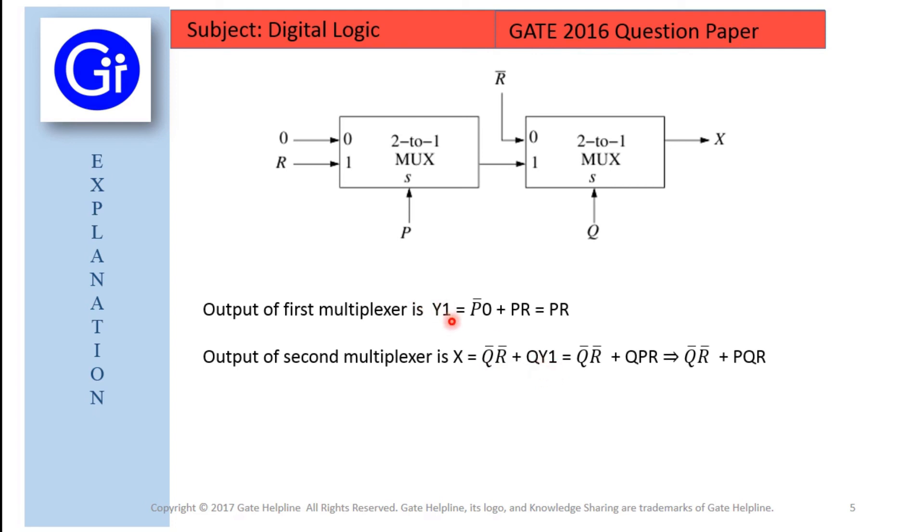which is the result here. So we substitute this Y1 here as PR because here the output is PR. So when we evaluate this, we will result in Q bar, R bar plus PQR.